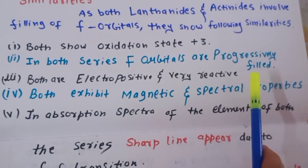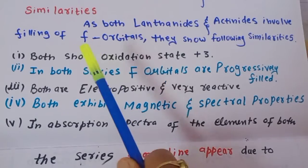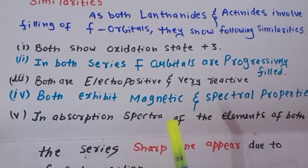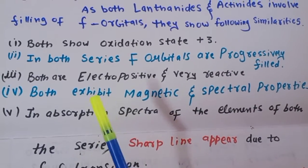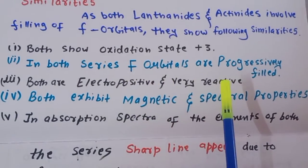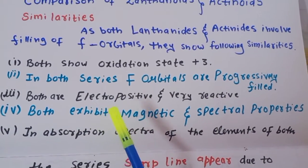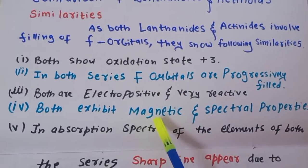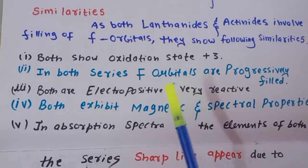Second point: in both series, the f orbitals are progressively filled, since these are f-block elements. Third point: both lanthanides and actinides are highly electropositive and very reactive — meaning they are always ready to lose electrons.